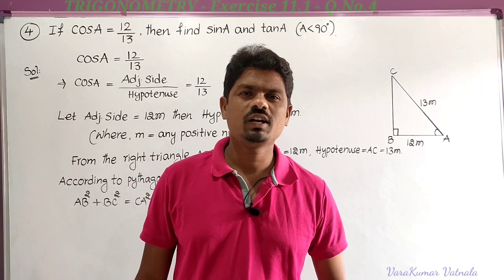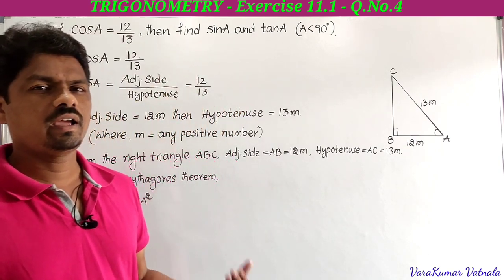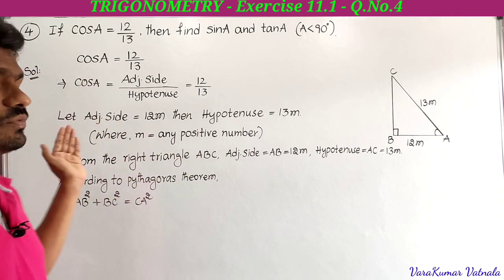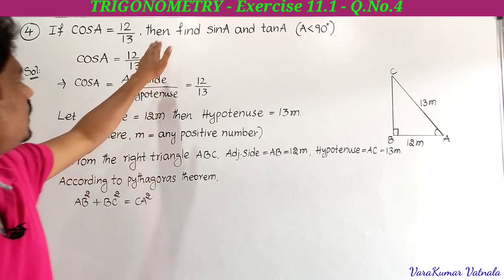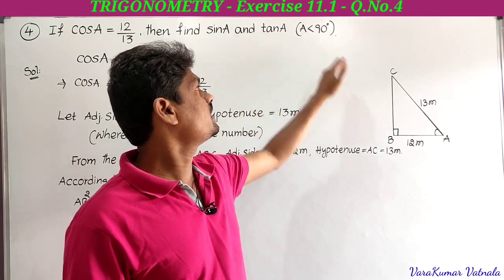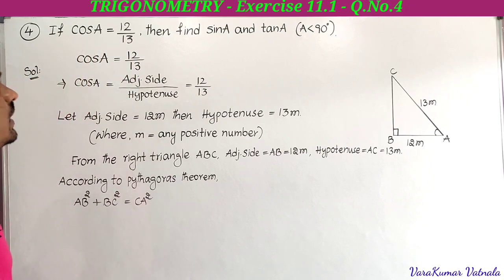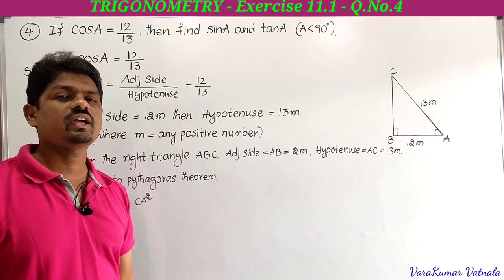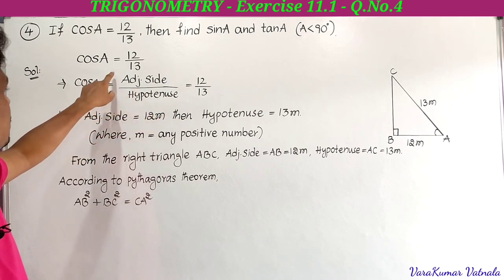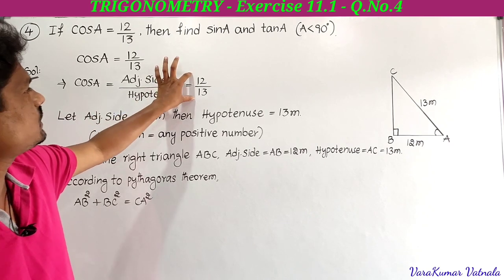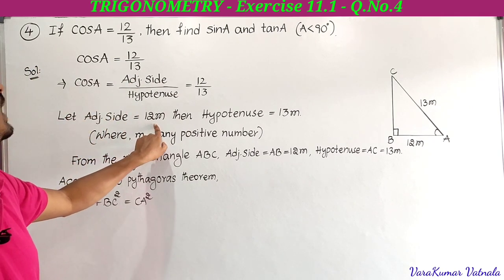Welcome back. Today we are going to solve problems from 11th chapter trigonometry exercise 11.1 — the fourth problem. If cos A equals 12 by 13, then find sin A and tan A, where A is less than 90 degrees. Cos A equals adjacent side by hypotenuse, which equals 12 by 13.